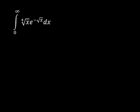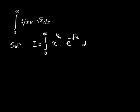In this problem, we need to evaluate the integral from 0 to infinity of the 4th root of x multiplied by e raised to the power of negative square root of x, integrated with respect to x. We are going to rewrite it as the integral from 0 to infinity of x raised to the power of 1/4 times e raised to the power of negative square root of x dx. Let this be equation number 1.